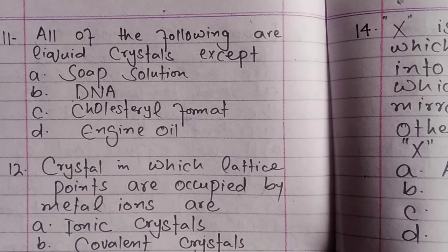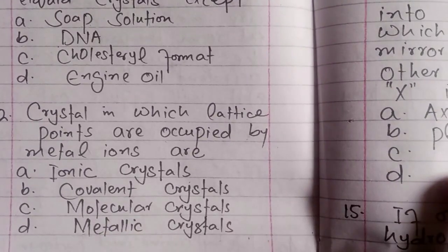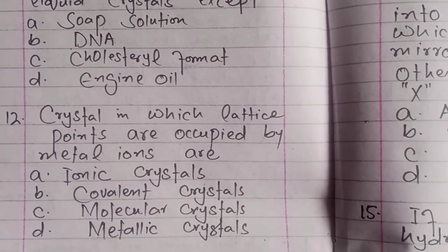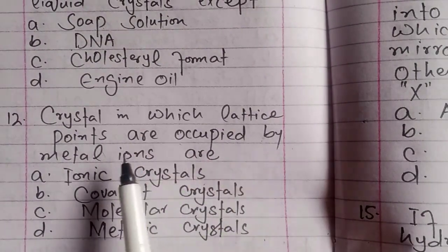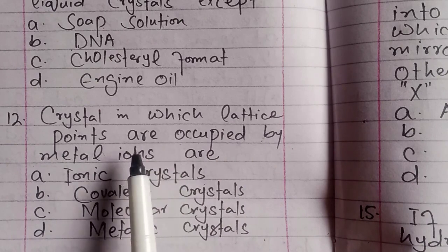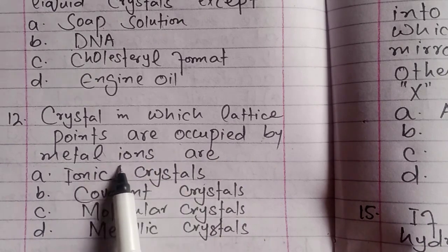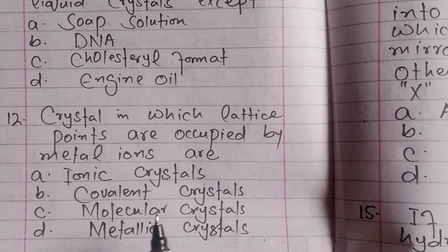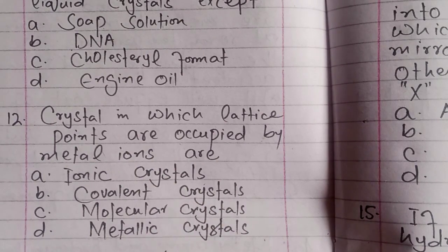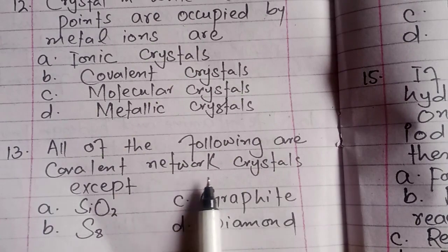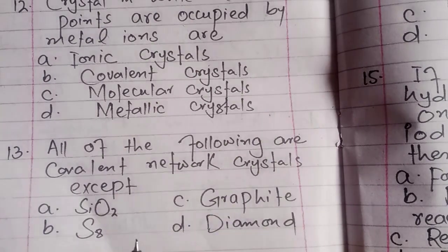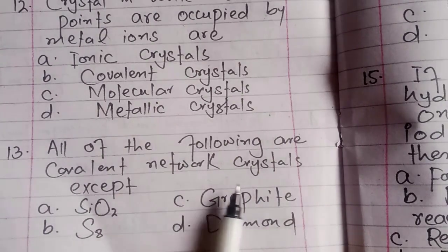Question 12: In a crystal, the lattice points are occupied by metal ions. Which type of crystal is this? The options are: ionic crystals, covalent crystals, molecular crystals, or metallic crystals. Also, which of the following are covalent network crystals?